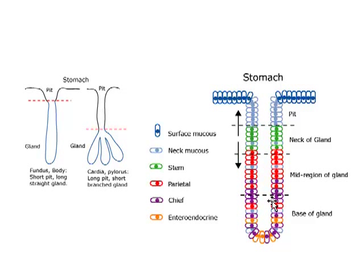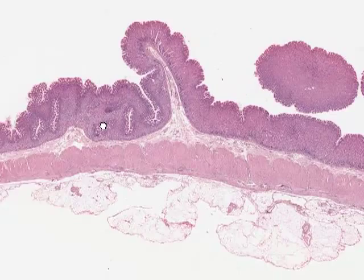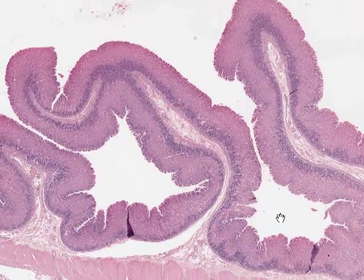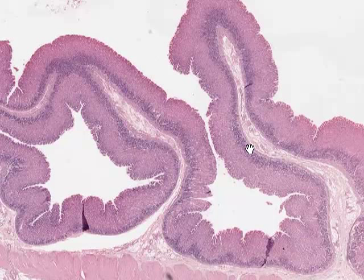Now let's look at a microscope slide of the stomach. Here we're looking at a region that borders on two anatomical regions. As you'll know from lectures, the stomach has a series of permanent longitudinal folds in the mucosa called rugae, which extend approximately along the long axis of the stomach. Here is a section through one rugae, and here is a section through another.